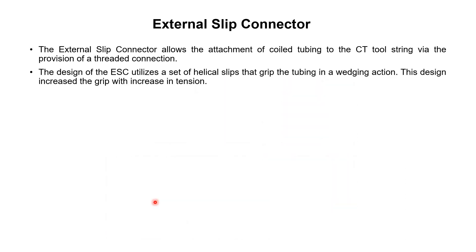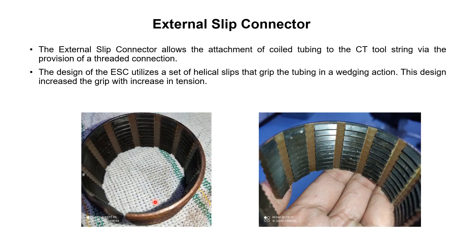The design of the external slip connector utilizes a set of helical slips that grip the tubing in a wedging action. Here are the slips used in the external slip connector — we can see that they have wedges inside them. The design is such that when tension is increased in the connector, the grip of these wedges increases on the CT string.